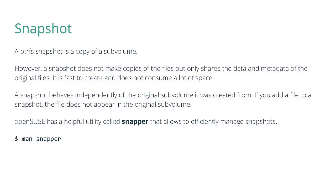A Btrfs snapshot is a copy of a sub volume — as simple as that. A snapshot does not make copies of the files but only shares the data and metadata of the original files, just as we learned about the copy-on-write principle. Snapshots are fast to create and do not consume a lot of space. If you create a snapshot of a sub volume, mount it as read-write, and add a file to it, the file won't appear in the original sub volume because they are distinct sub volumes.